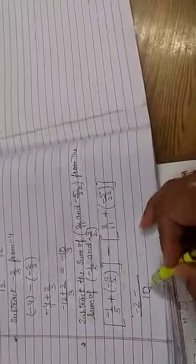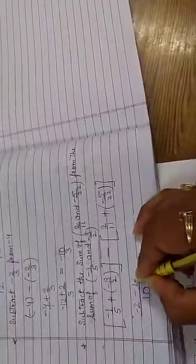LCM of 5 and 2 is 10. 10 divided by 5 is 2, 2 multiply minus 1 is minus 2. Plus and minus becomes minus. 10 divided by 2 is 5, 5 multiply 3 is 15.